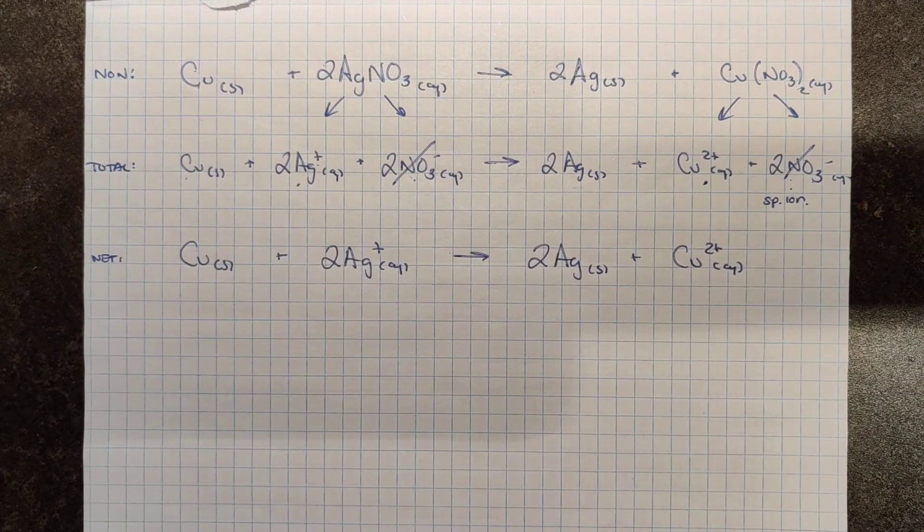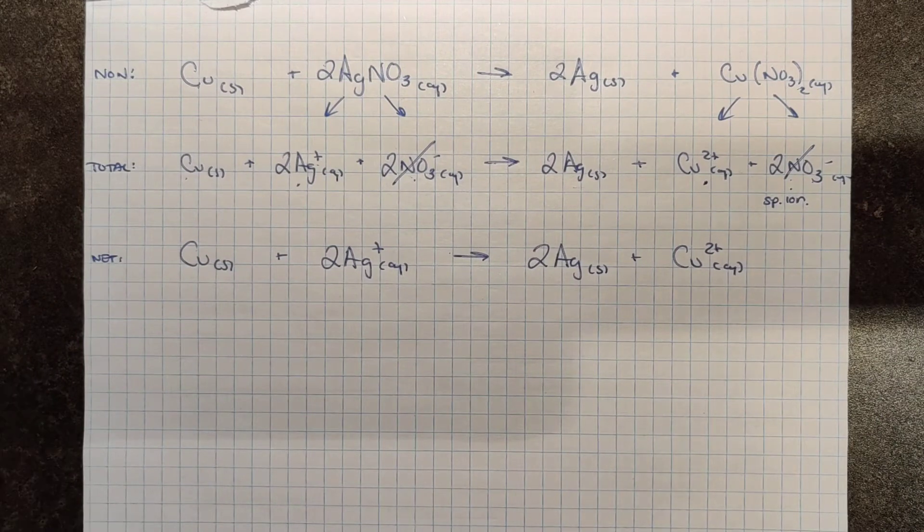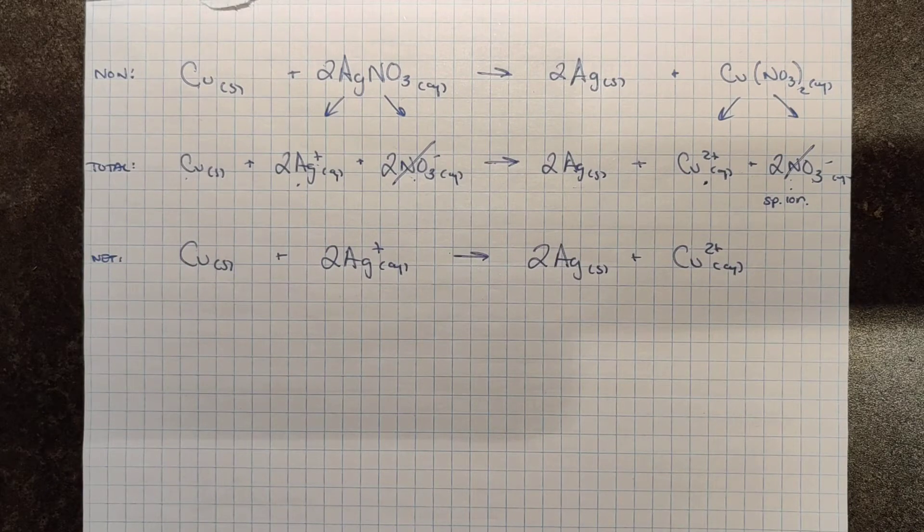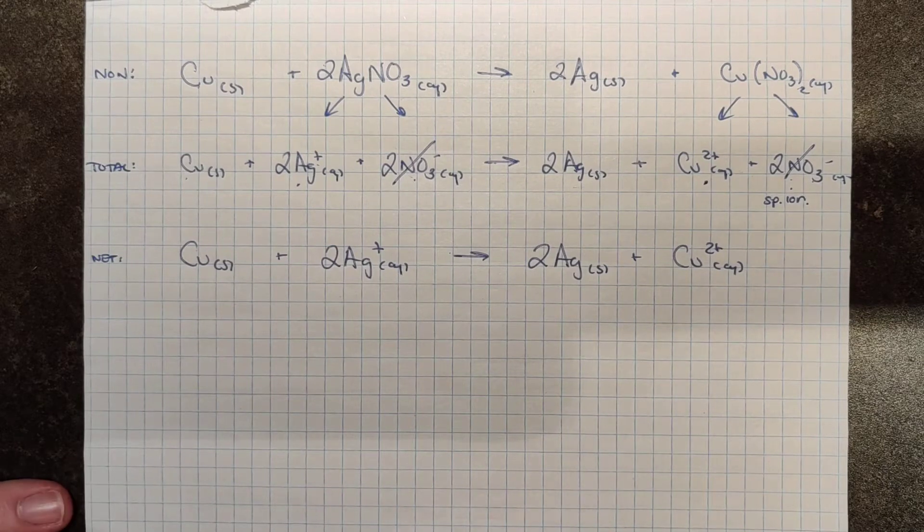Now this is all well and good. This is stuff we did all through CHEM 20. And we took a closer look at what was actually taking place in our beakers and our reaction vessels. We can go one step further here, and we can take a look at which species gained and lost electrons.